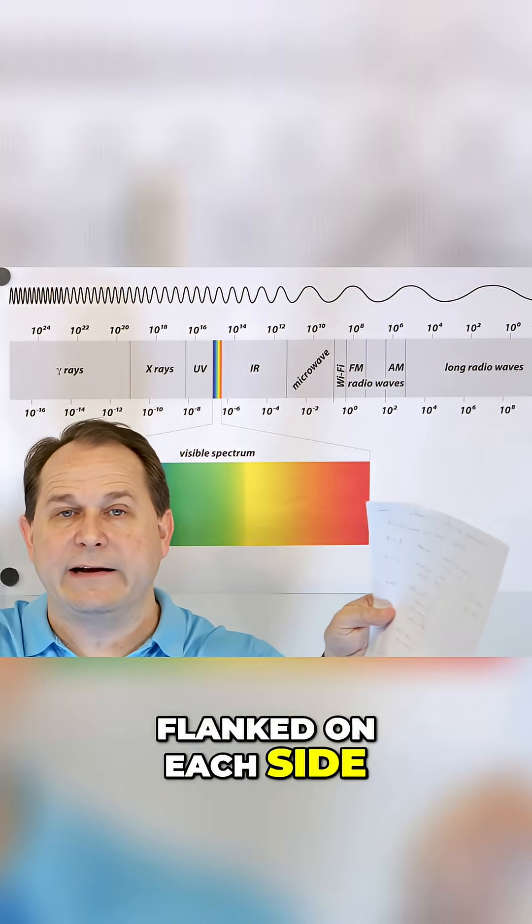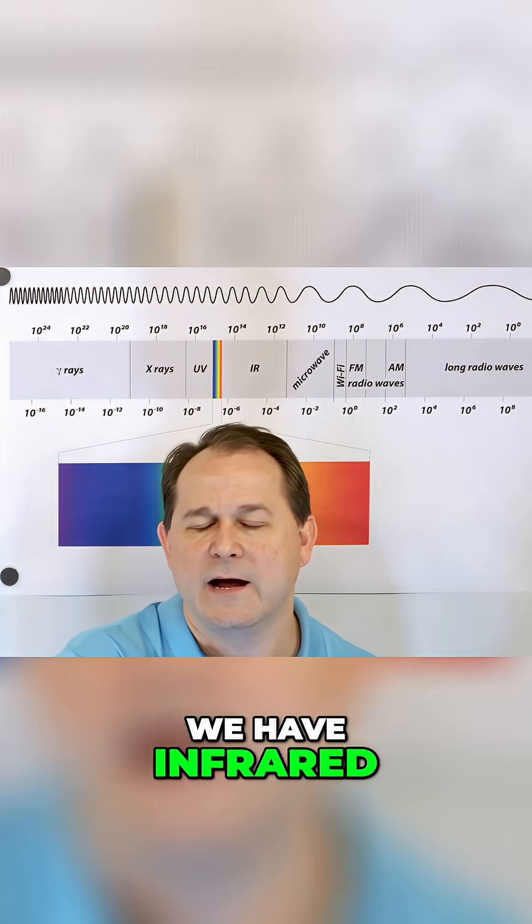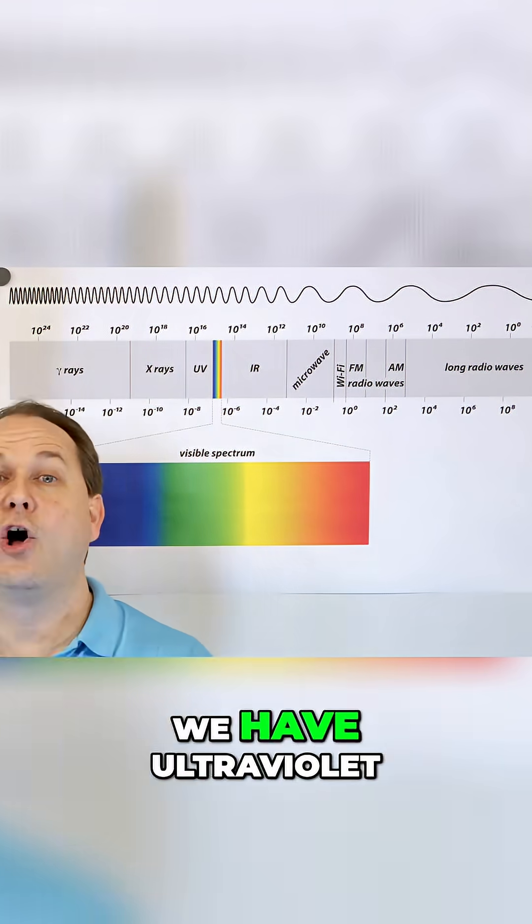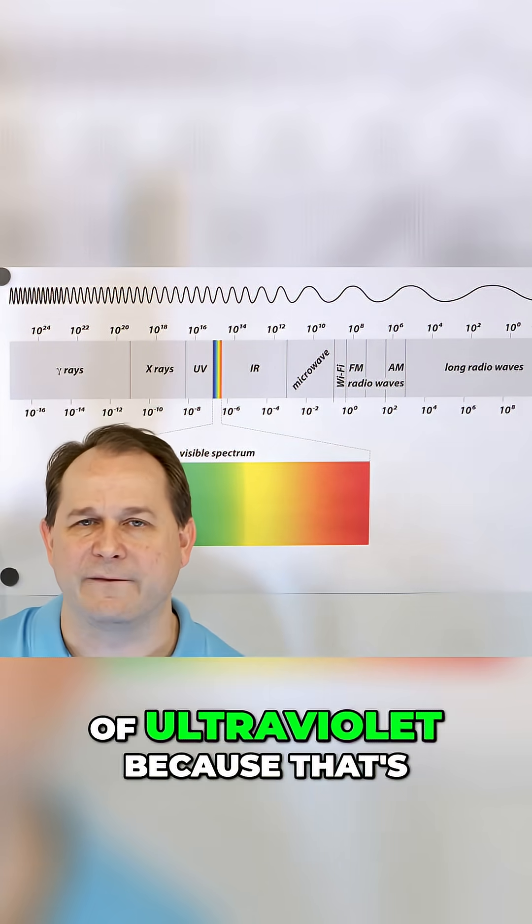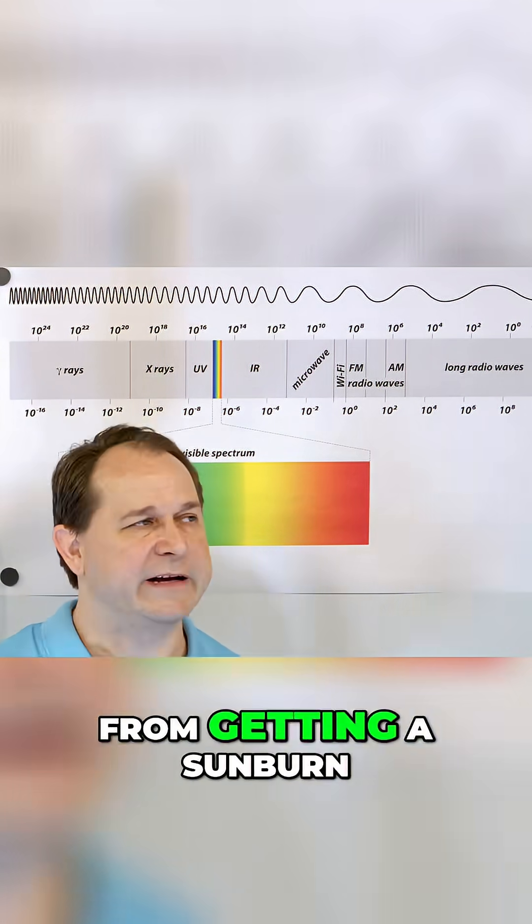Flanked on each side of the visible spectrum, on the one side of red we have infrared, and on the other side of violet we have ultraviolet. I know you've heard of ultraviolet because that's what we have to protect ourselves from the sun from getting a sunburn.